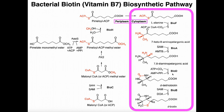The next enzyme in sequence is BioD. This uses ATP and carbon dioxide to attach a carbonyl between the two nitrogens, and then that carbonyl carbon forms a bond to both nitrogens, effectively creating a cyclic structure characteristic of biotin. BioD puts in the first ring, and this molecule is called dethiobiotin — 'dethio' because the sulfur has not yet been added, which will complete the second ring to make the molecule bicyclic.